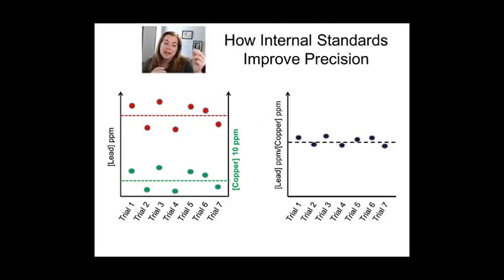Because when the lead number is high and the copper number is high, if you divide that lead number by a big number, you bring it down. In trial two, the lead number is a little low. You're dividing it by a smaller number, so you're boosting it.